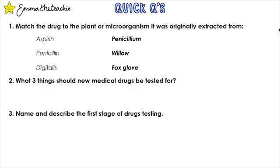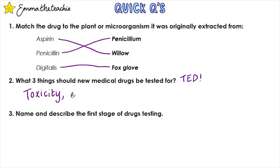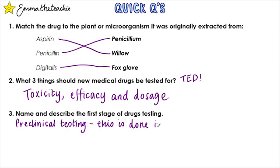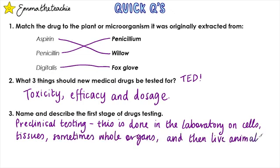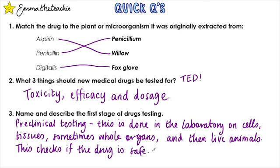Quick question answers: Aspirin was extracted from the willow tree, penicillin came from the penicillium mould, and digitalis came from foxgloves. The three things new medical drugs should be tested for are toxicity, efficacy, and dosage — remembered with TED. The first stage is pre-clinical trials, carried out in the laboratory on cells, tissues, sometimes whole organs, and then live animals, checking that the drug is safe and non-toxic.